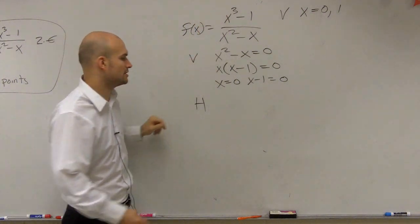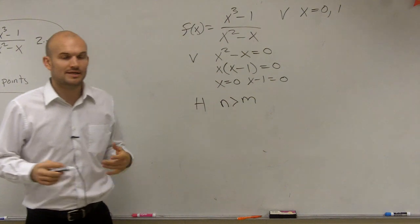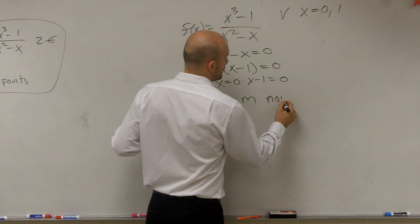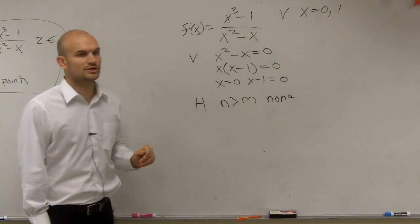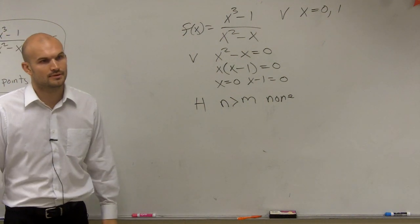Our degree up top is larger than the degree on the bottom. So we have, say, n is larger than m. So by using your horizontal asymptote test, you need to know that there is no horizontal asymptote when your degree in the numerator is larger than the degree in the denominator, right?